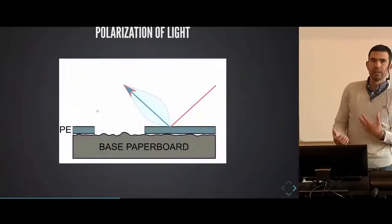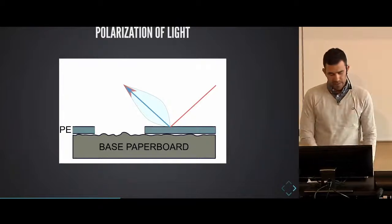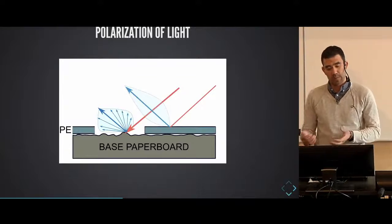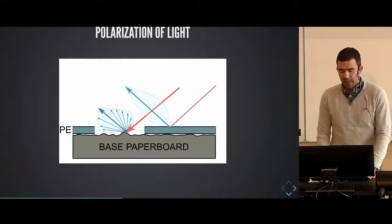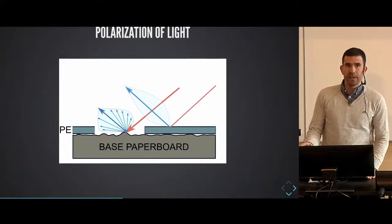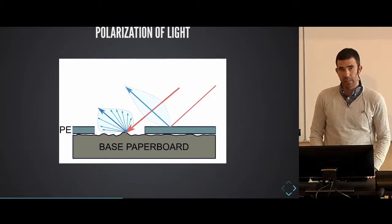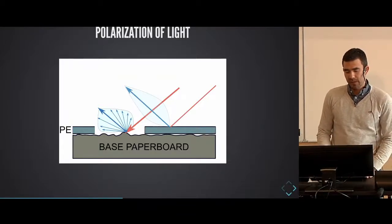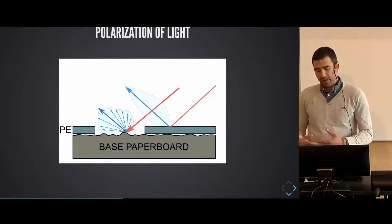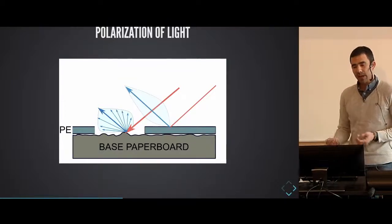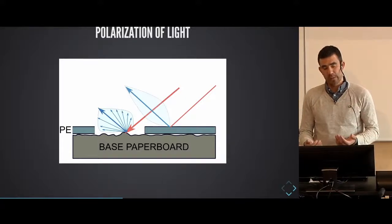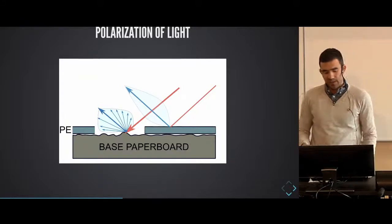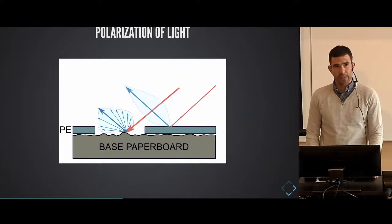Making an analogy between the surface of the lake and other structures, we can use the concept of polarization to describe how the degree of polarization is affected by different materials. The surface of the lake is analogous to the PE-coated surface we are inspecting — a highly smooth surface — compared to other structures that can refer to the base of the paperboard. After reflection at a certain angle, light reflected from the PE coating surface will be highly polarized — to a higher degree than light reflected from the base of the paperboard.